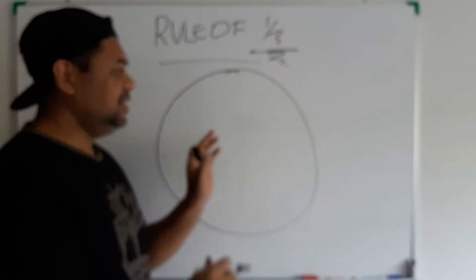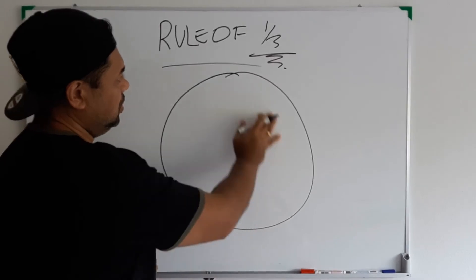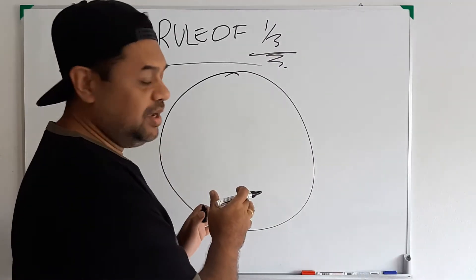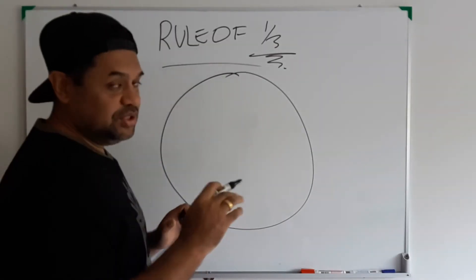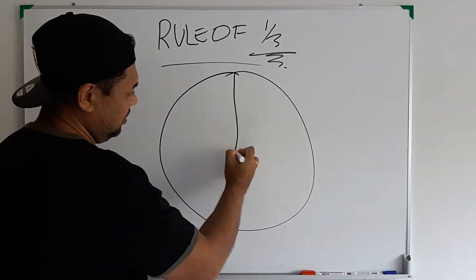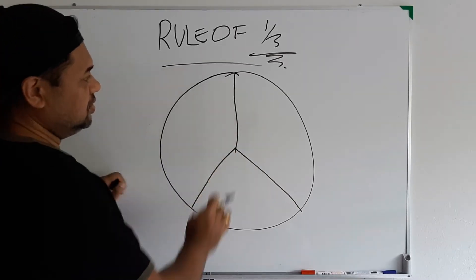So imagine that this is your whole pie that you're gonna follow. Basically we want to divide this up into thirds. We've got down here one third and one third.